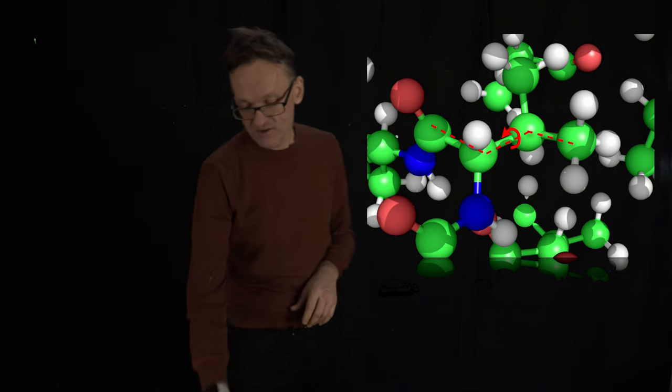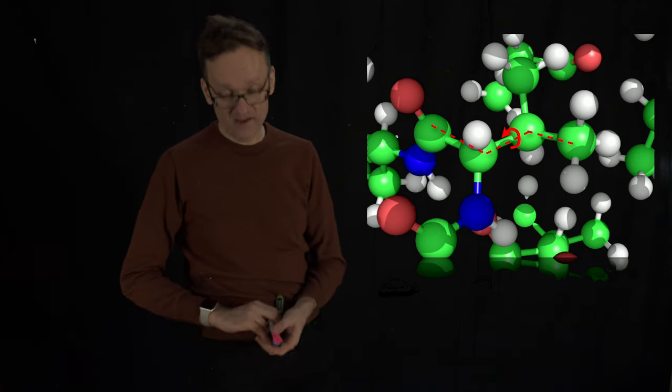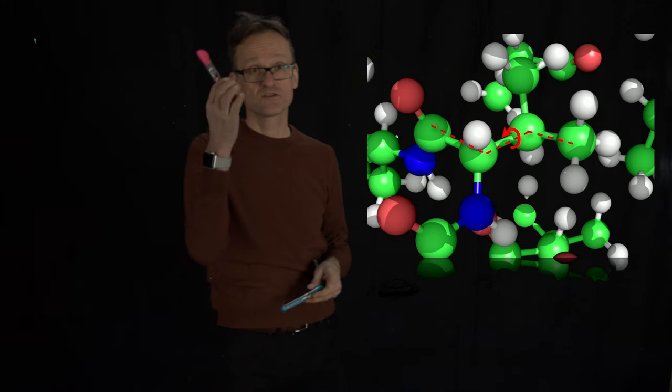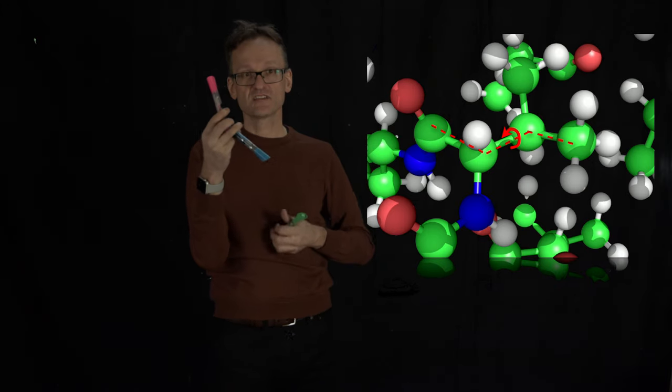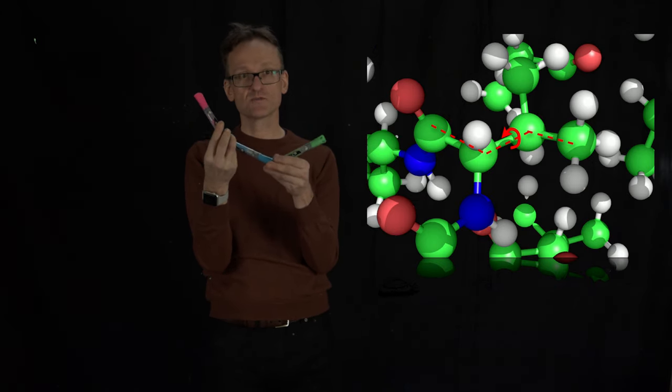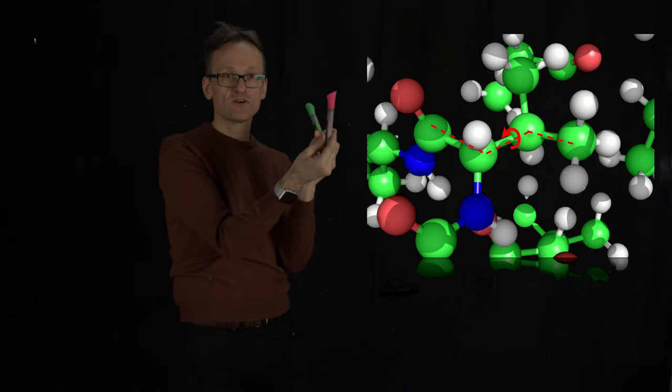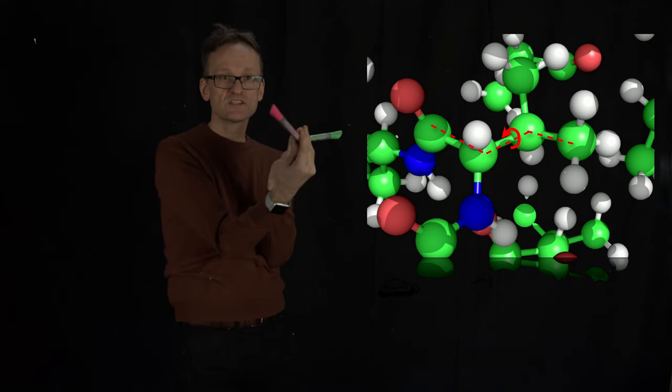This is getting a bit trickier to visualize. I'm going to try it anyway. I can use my pens here. So here's one bond, here's the second bond, and here's the third bond. So the atoms would be at the end of the pointers here. So if you look at this, I can turn this around.